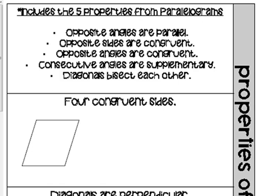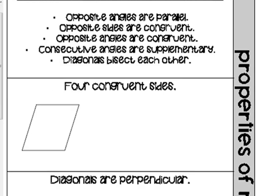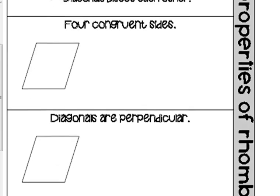Getting a little bit more specific than a rectangle is a rhombus. On your paper it says 'properties of rhombi' — that's the plural of rhombus, not rhombuses. All the properties of parallelograms apply, but we have four congruent sides. All the sides are congruent. So it's a parallelogram with four congruent sides, but it's not a square — it's like a tilted square.